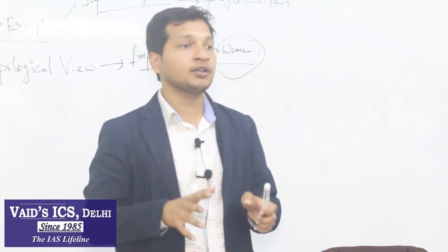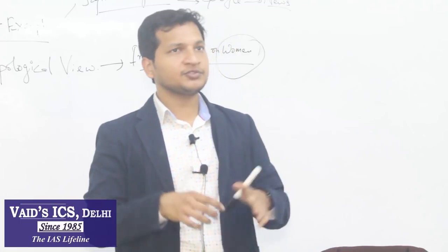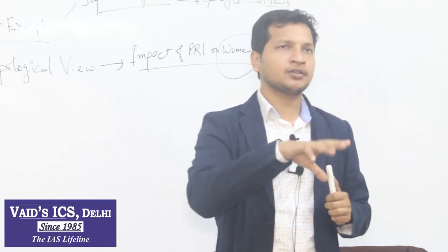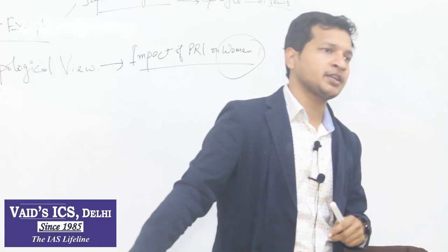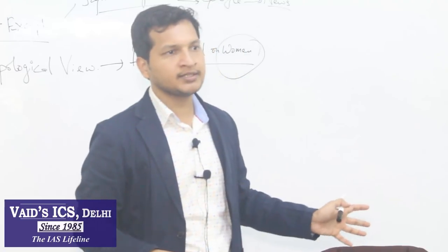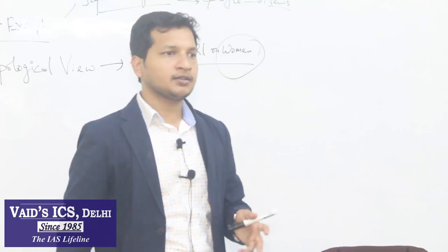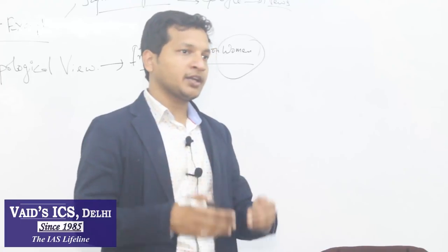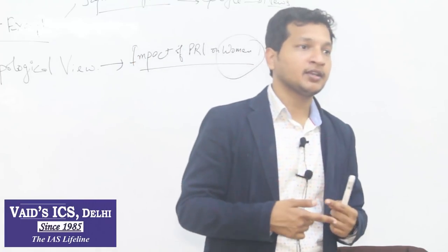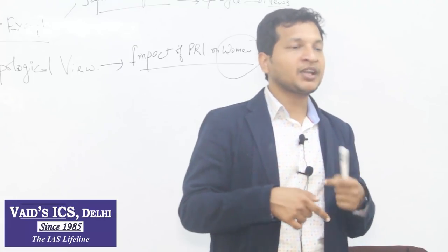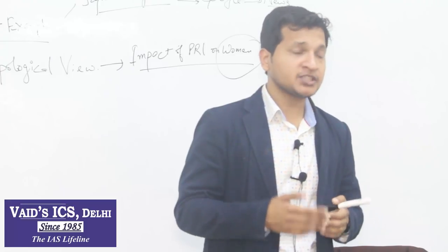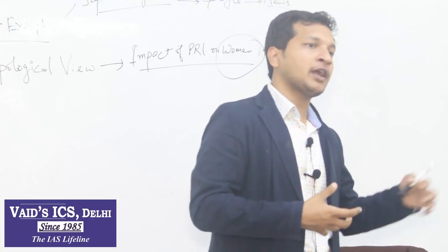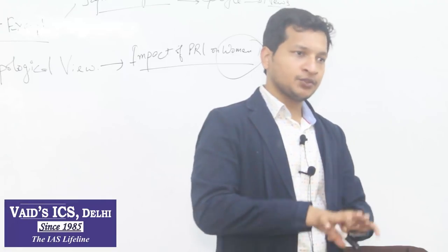You have to put good case studies in these kinds of questions. First, start with what is the Jajmani system using William Wiser's concept. Then make a diagram with the example of D.N. Majumdar's study on a Lucknow village. Then present both sides and conclude. You can conclude that yes, Jajmani system is certainly deteriorating as market forces increase and the role of money increases — exchange is no longer in kind but in cash. But still, the social relations and social bonding from the past are continuing.